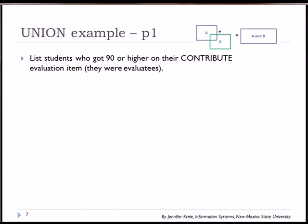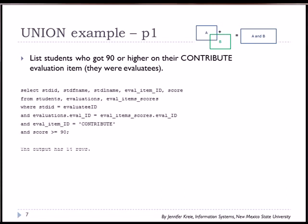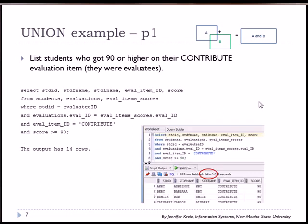So let's look at some examples from our students and teams database. We're going to list students who got 90 or higher on their contribute evaluation item. So these students were evaluatees. So here's our SQL statement. We're selecting student ID, first name, last name, eval item ID, and score. We're working with the students table, evaluations, and eval item scores. We join those tables in the WHERE clause. We limit the eval item ID to just those for contribute and scores greater than or equal to 90. And the result we get when we run that is 14.